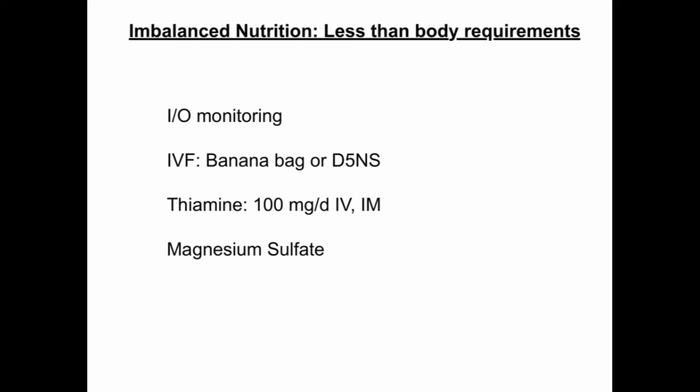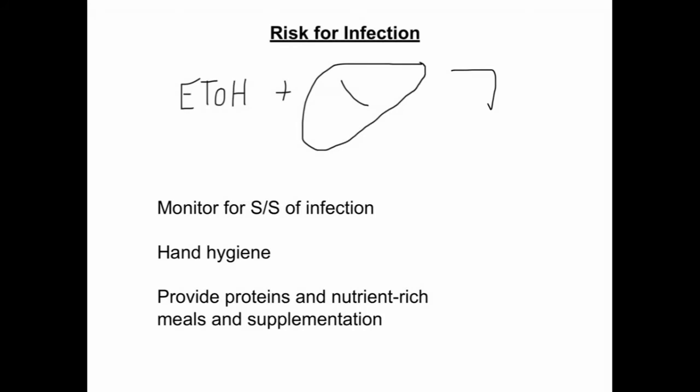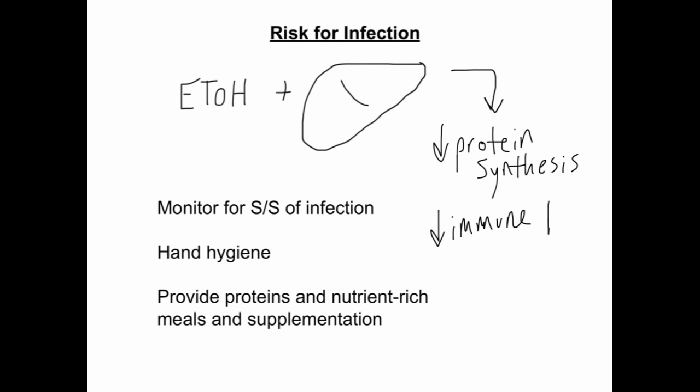The alcoholic patient is at risk for infection because alcohol interferes with the liver's ability to synthesize proteins, compromising the immune system. In addition, chronic alcoholics have decreased production, function, and movement of white blood cells. Monitor the patient for signs and symptoms of infection, practice hand hygiene, and provide the patient with protein and nutrient-rich meals and supplementation.